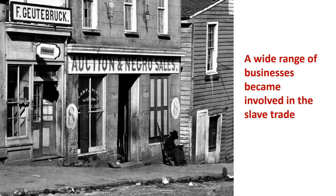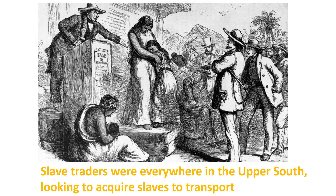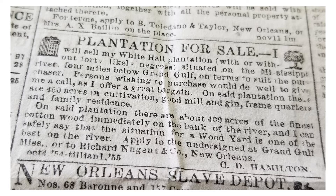The new antebellum domestic slave trade was carried on by a diverse range of businesses. Businesses that sold farm equipment and animals often carried a line of slaves. Real estate companies sold slaves, often including slaves with the purchase of land as an incentive. Slaves were sold at estate auctions with news published in newspapers. Even charitable benevolent organizations dealt in slave buying to raise money for their cause. Slave traders were everywhere in the upper South — Virginia and Maryland — hanging out at taverns, country fairs, following bankruptcy filings, and obituaries to find slaves for sale.